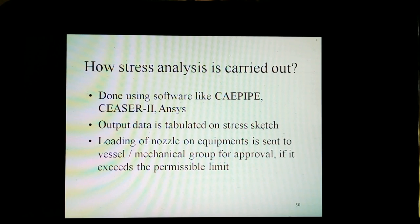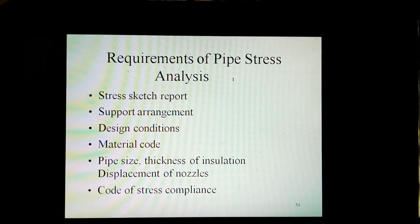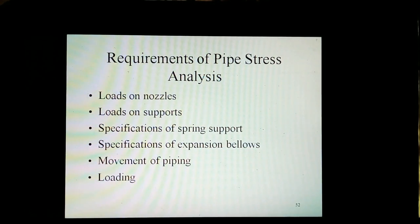Pipe stress analysis is carried out using software like CAEPIPE, CAESAR-II, ONCIS, etc. Output data is tabulated on a stress sketch. Nozzle loading on equipment is sent to the vessel or mechanical group for approval if it exceeds the permissible limit. Requirements of pipe stress analysis include stress sketch report, support arrangement, design conditions, material code, pipe size, thickness of insulation, displacement of nozzles, and code of stress compliance. Also required are loads from nozzles, loads on supports, specifications of spring supports, specifications of expansion bellows, and movement of piping and loading.